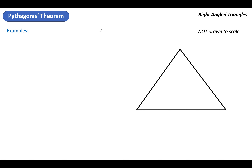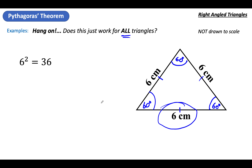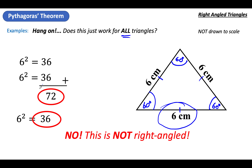You might be thinking: does this just work for all triangles anyway? No, it doesn't. This is an equilateral triangle — all three sides are the same and all angles are 60 degrees, so it's definitely not right-angled. Let's try the same thing: 6 squared is 36, and the other side 6 squared is 36. Add them: 72. Take the 'long' side and square it — that's clearly 36. No, it doesn't work. This is not a right-angled triangle. It only works for right-angled triangles.